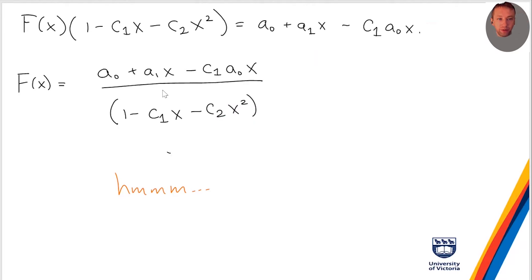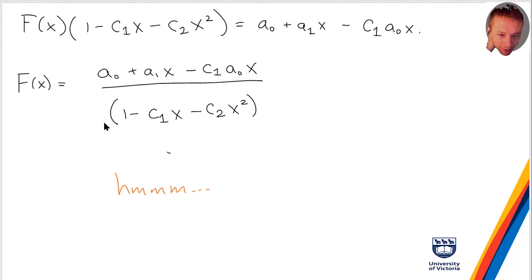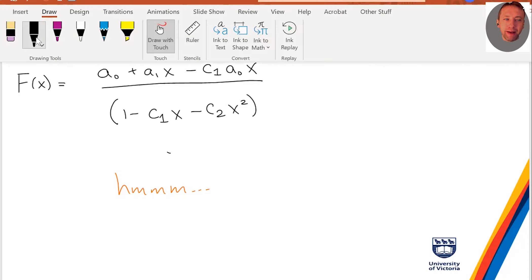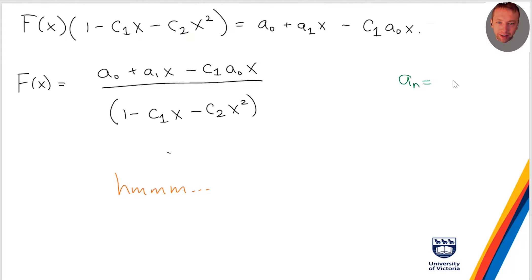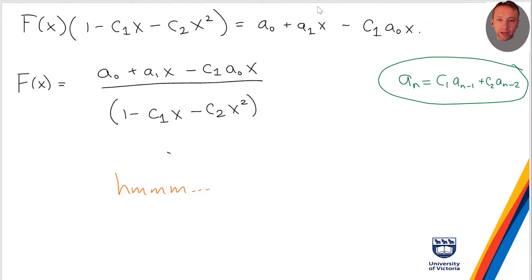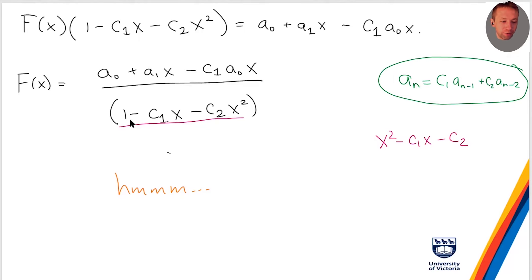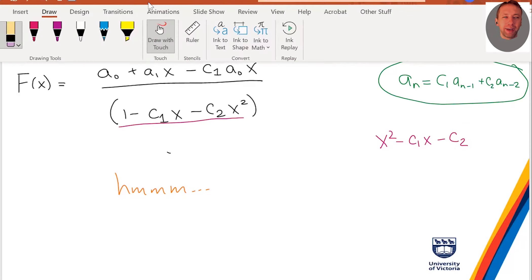So f(x) equals (a_0 plus a_1·x minus c1·a_0·x) divided by (1 minus c1·x minus c2·x²). One observation: the denominator kind of looks like the characteristic polynomial, but it's backwards — remember the characteristic polynomial was x² minus c1·x minus c2. Here the x² term has become a constant term and vice versa. This seems strange, but nothing is wrong — that's exactly what you want.